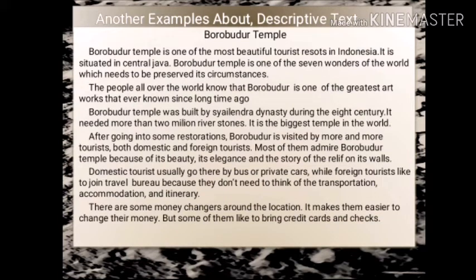Another example of descriptive text — Borobudur Temple. Borobudur Temple is one of the most beautiful tourist destinations in Indonesia. It is situated in Central Java. Borobudur Temple is one of the seven wonders of the world which needs to be preserved. People all over the world know that Borobudur is one of the greatest artworks ever known. Borobudur Temple was built by the Sailendra dynasty during the 8th century. It needs more than 2 million river stones and it is the biggest temple in the world.